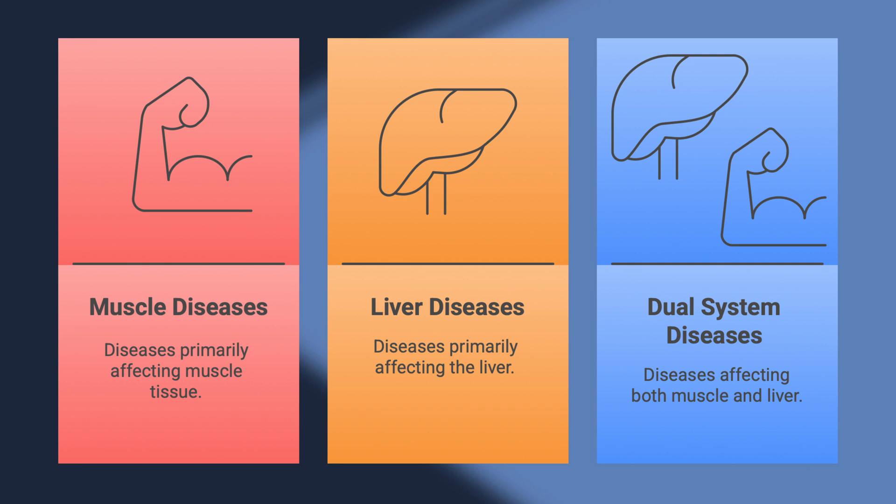We can now start studying the diseases. The best way to do that is by organizing them into three main categories: diseases that affect mainly the muscle, mainly the liver, or both systems. This is really the first thing to do every time you encounter a case of a glycogen storage disease — try to deduce which category you're in. If you can square the disease into one of the three categories, you're already 80% of the way there.